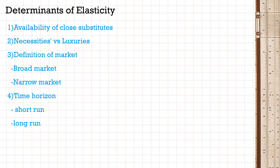Finally, the fourth determinant is time horizon. In economics, there is a short run response and a long run response. In the short run, goods have less elastic demand because people have less time to respond to changes. Whereas in the long run, goods have elastic demand because people can take time reacting to changes. For example, if the price of petrol rises today, this will affect quantity demanded slightly in the short run, but the demand curve will be elastic in the long run because you can buy a fuel-efficient car or live nearby your workplace.